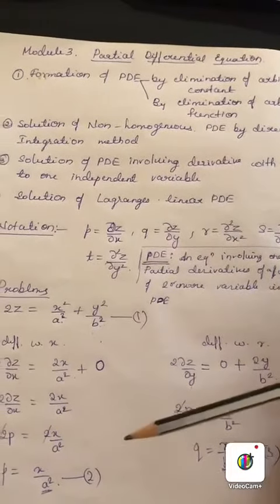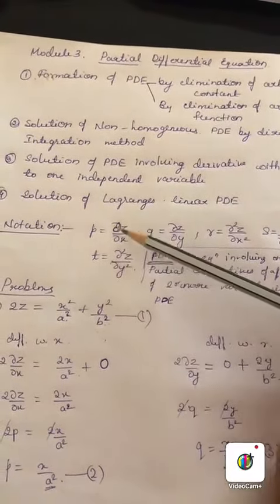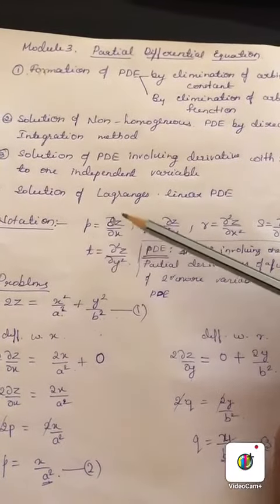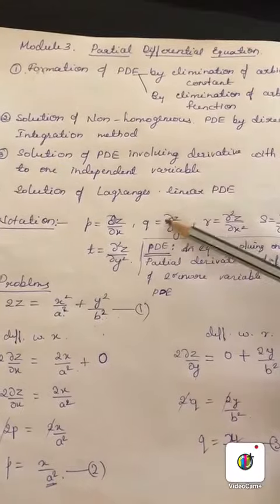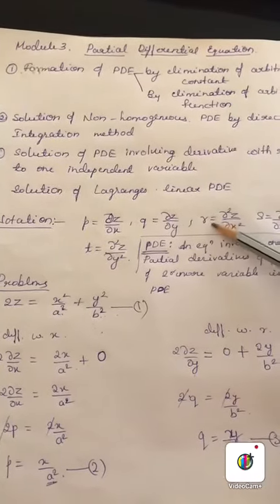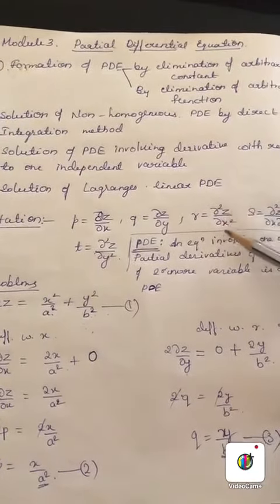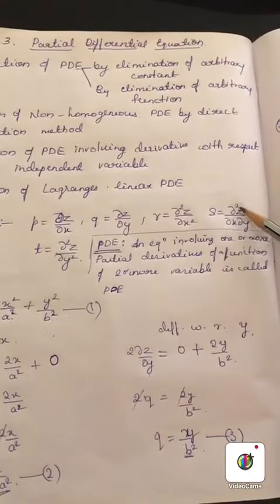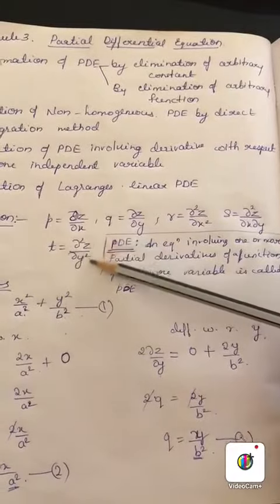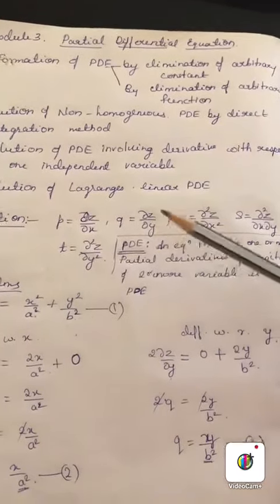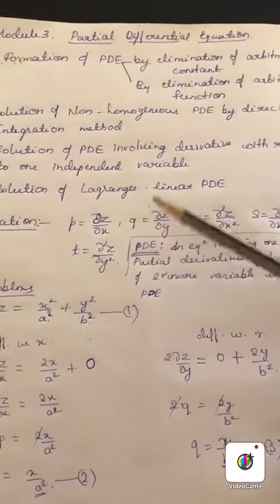While solving the problems we are going to use some notation: p is equal to ∂z/∂x, q is equal to ∂z/∂y, r is equal to ∂²z/∂x², s is equal to ∂²z/∂x∂y, and t is equal to ∂²z/∂y².